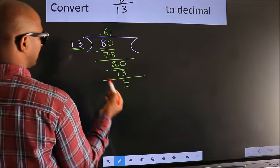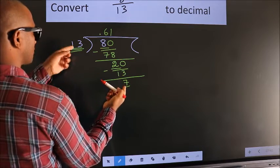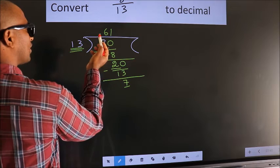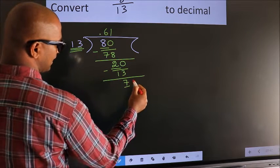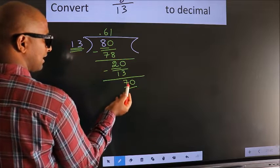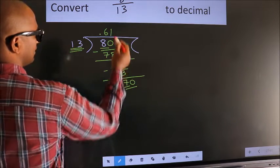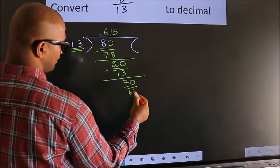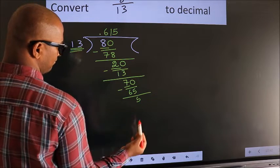Here we have 7, here 13. 7 is smaller than 13. And we already have the decimal, so we can directly take 0. So, 70. A number close to 70 in the 13 table is 13 fives, which is 65. Now, we subtract. We get 5.